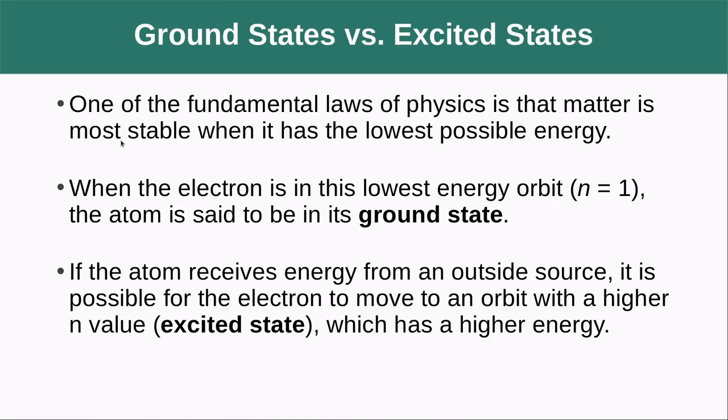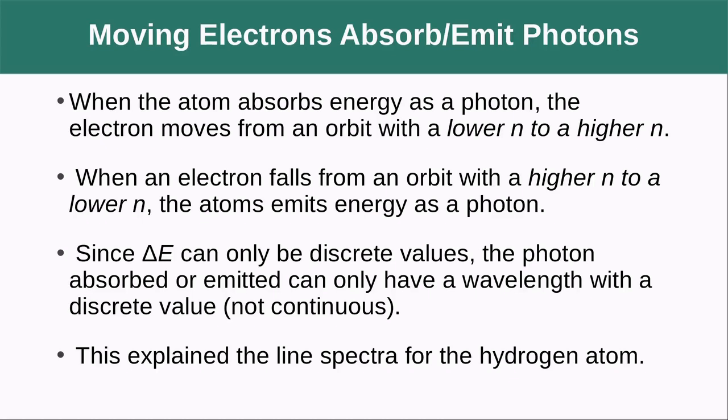All right. So we've got some language to talk about here. One fundamental idea that we have from the laws of physics is that matter is most stable when it has the lowest possible energy. So when an electron is in this lowest energy orbit, the atom is said to be in its ground state. If the atom receives energy from an outside source, it is possible for the electron to move to an orbit with a higher n value. And this is going to be an excited state. I think you guys have noticed that as I've been talking through this, I'm talking about them exciting electrons. And that is what happens when an electron moves from a lower energy state to a higher excited state.